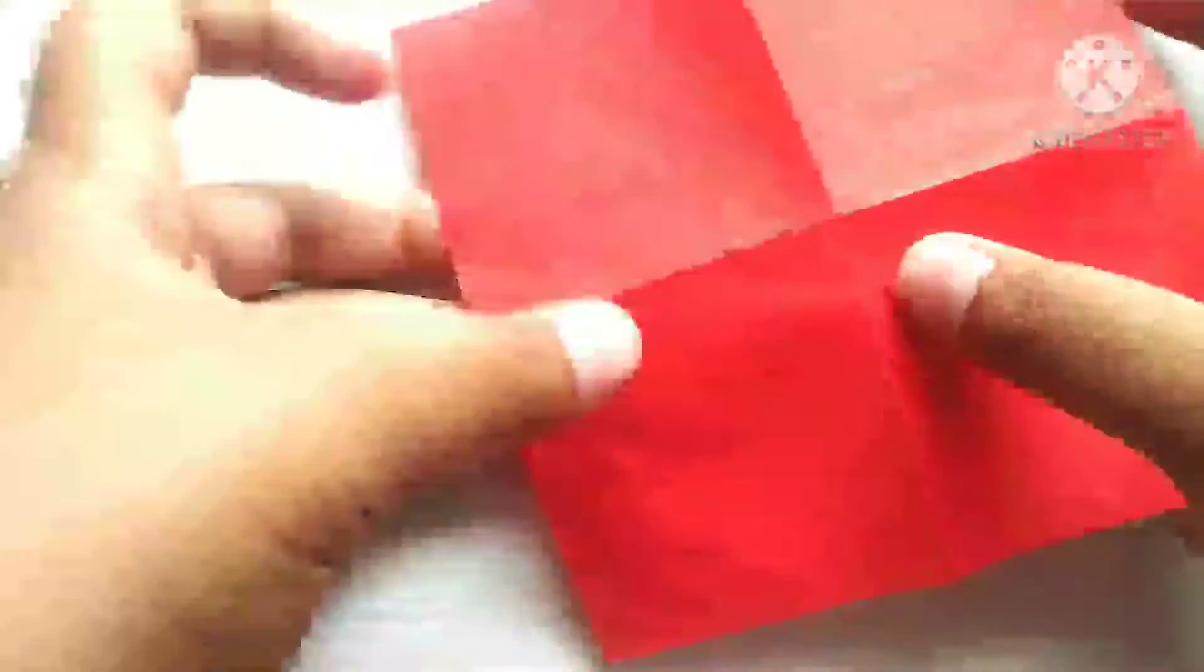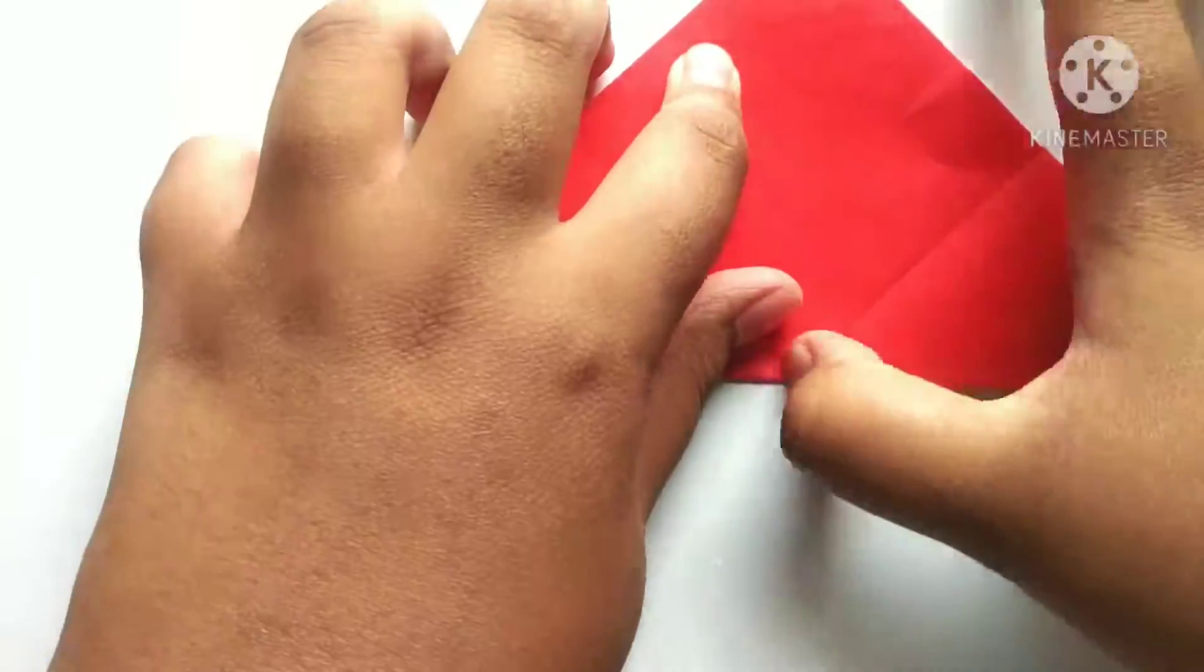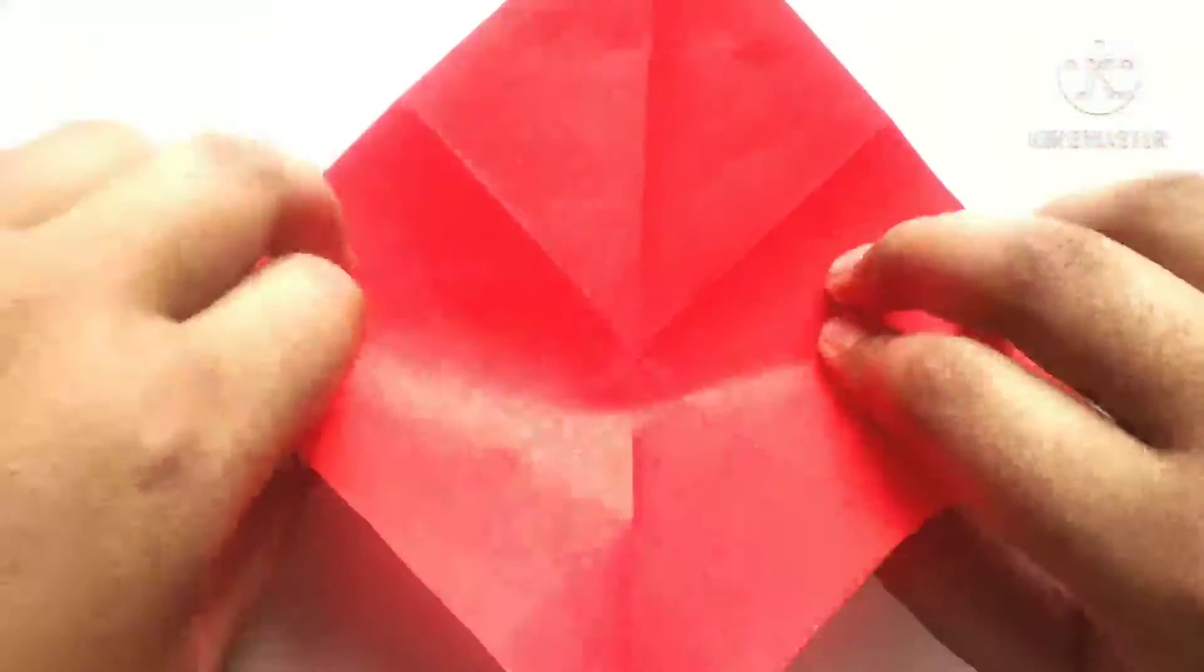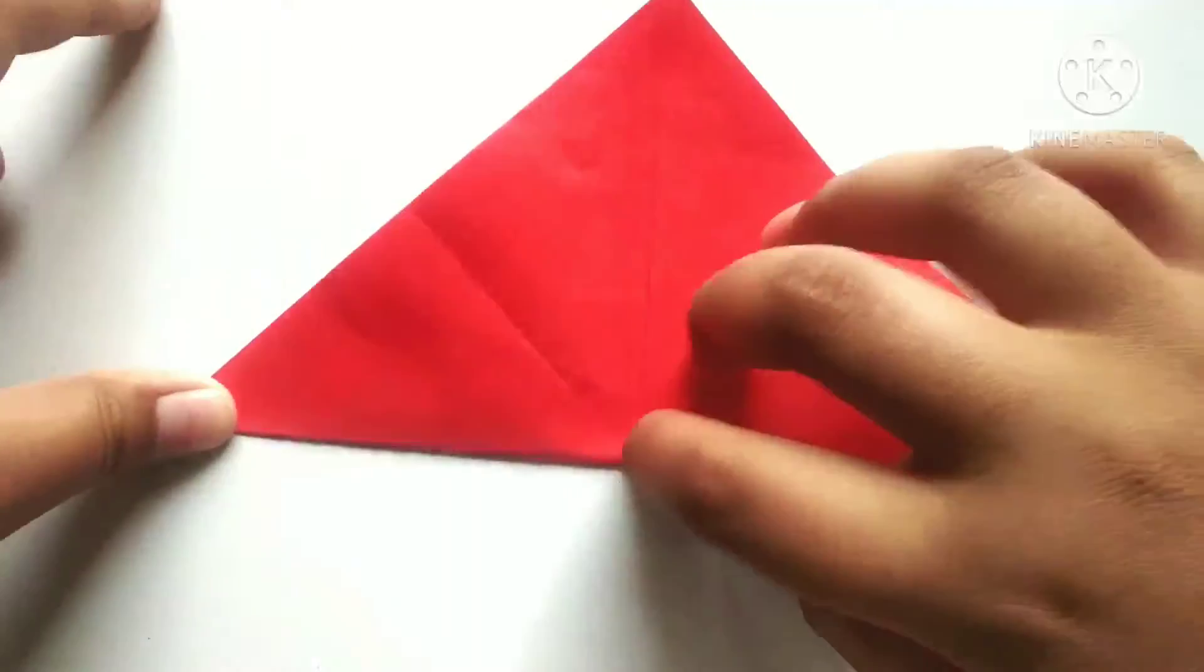After folding another half, we need to fold diagonally like this. Now we need to fold another diagonal too.